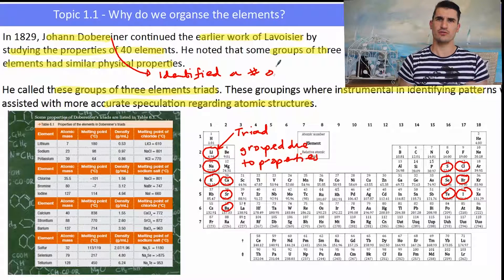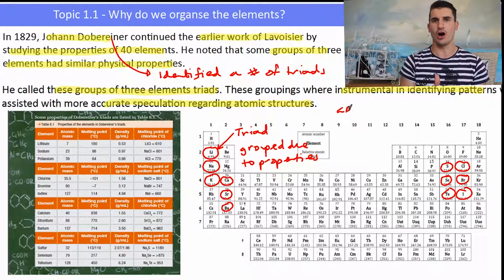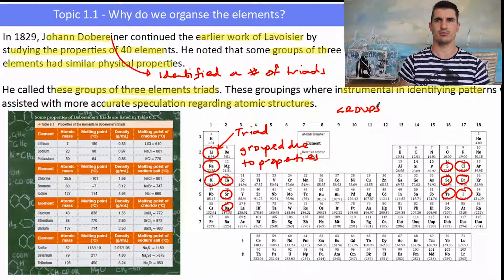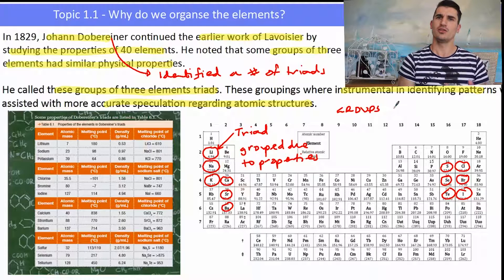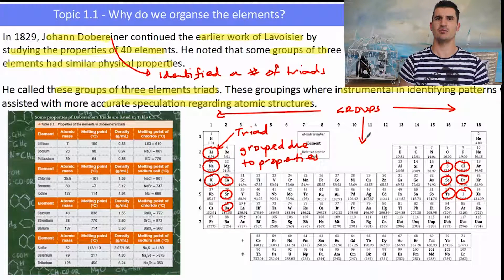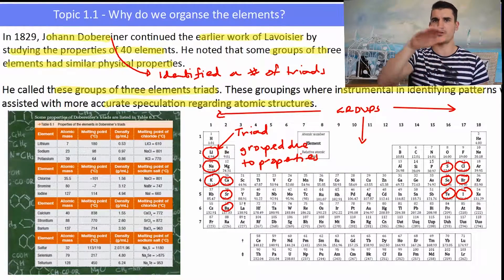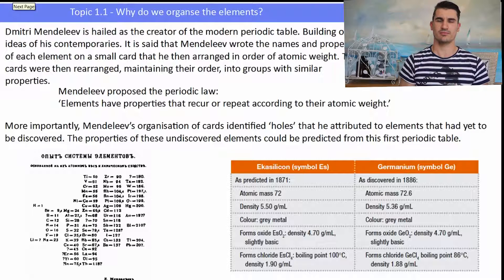To review: Döbereiner identified a number of different triads which helped us start to develop an understanding of the periodic table. Those triads are found in the groups of the current periodic table, and the groups are the vertical columns. The periods are the horizontal rows.